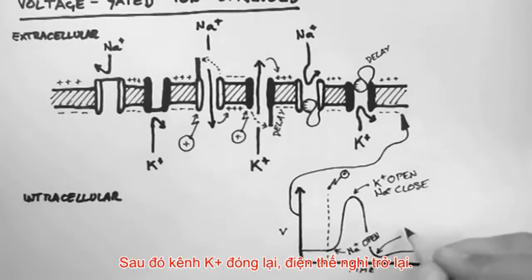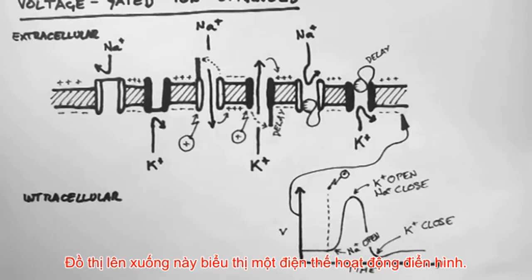Then the potassium channels close, and the resting membrane potential returns. This up and down graph shows a typical action potential.